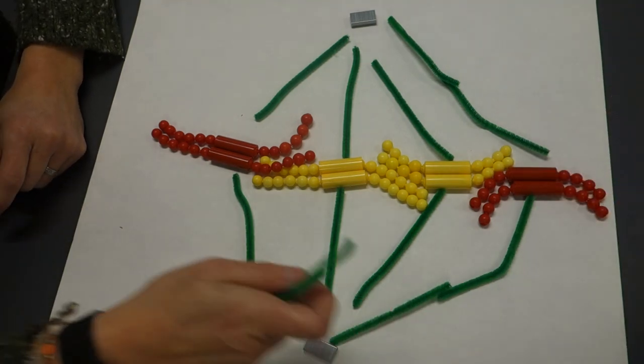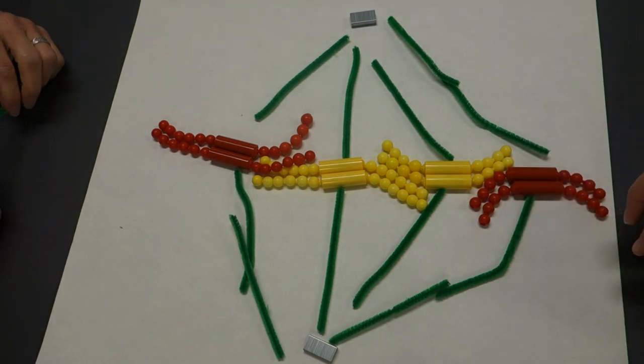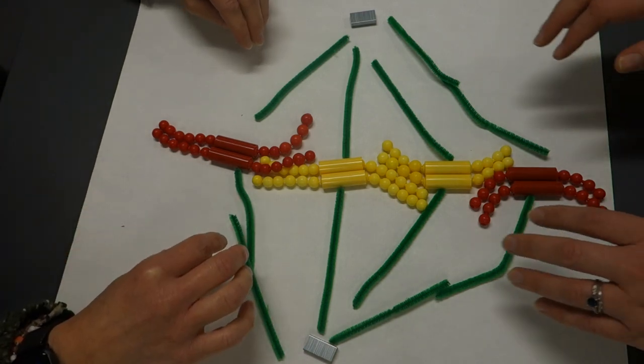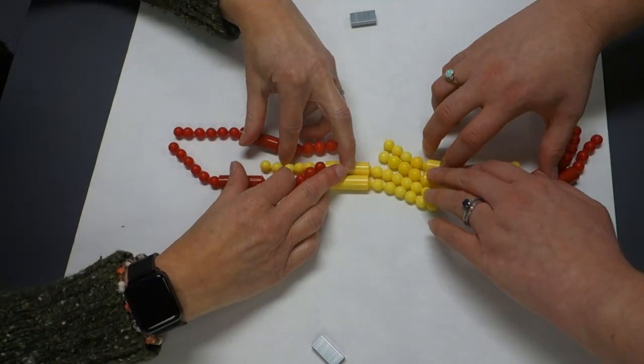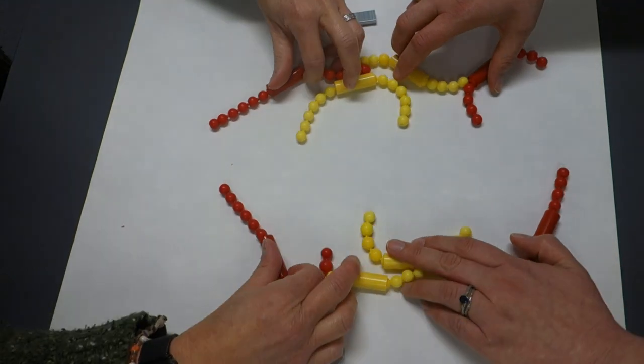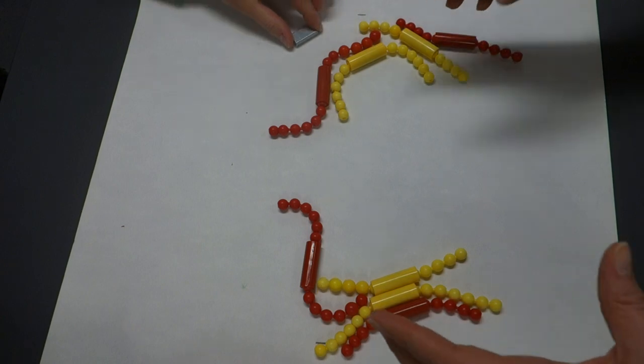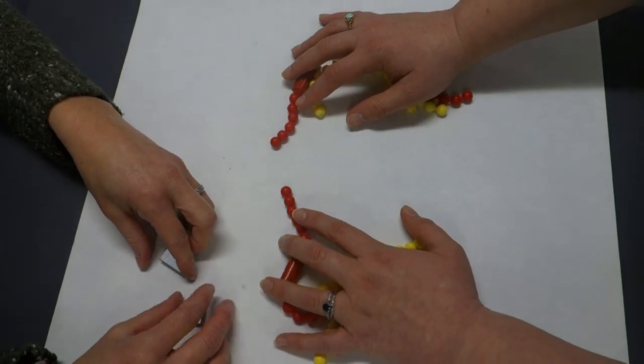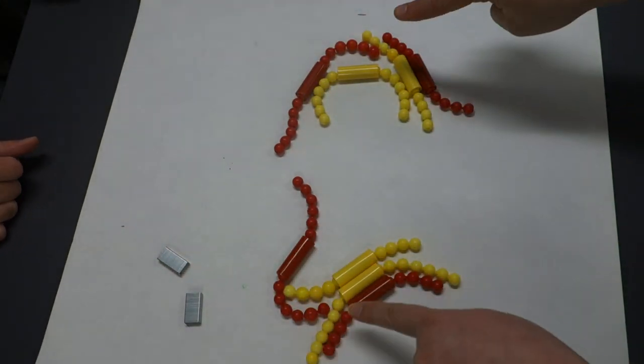And then what will happen as we transition into anaphase is that these spindle fibers are going to get shorter. As they shorten, they're actually going to pull apart our sister chromatids. So for simplicity's sake, I'm just going to do this. Okay. Spindle fibers, they're still there. But then what happens is we pull apart the sister chromatids. We take our duplicated chromosomes and we create single chromosomes. So in anaphase, the sister chromatids separate apart from each other.